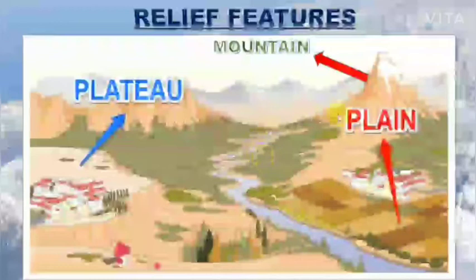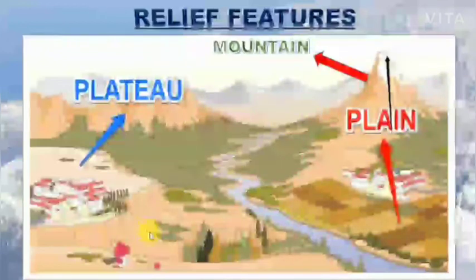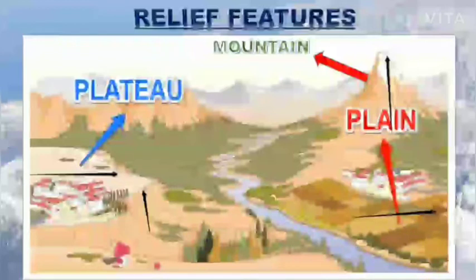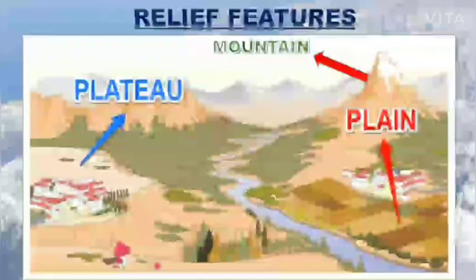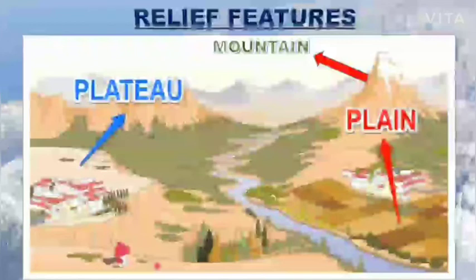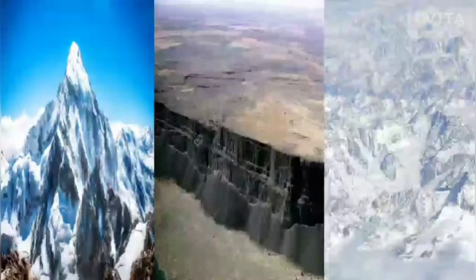At some places, the land is several thousands of metres above the mean sea level, while at some places it is flat at the top, and at others it is totally flat. These variations on the land surface are called relief features, and the way landforms have developed on the earth's surface offers a sound basis for their classification. The three major types of landforms classified on the basis of their elevation, relief, and slope are mountains, plateaus, and plains — and these are the three major landforms we are going to deal with in this chapter.